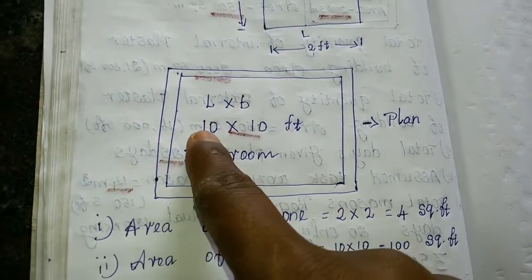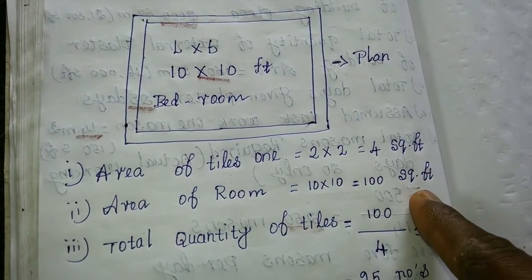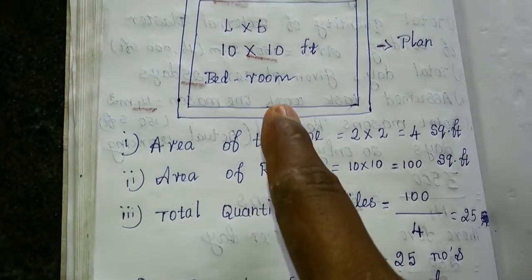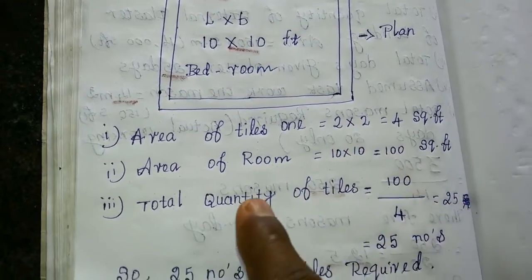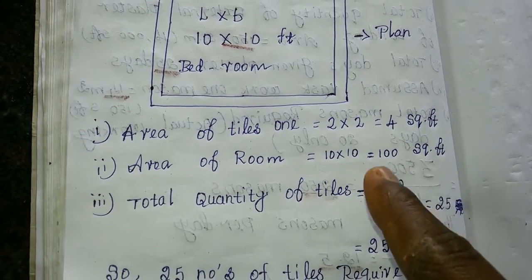Total quantity of tiles: the area of room divided by one tile's area. 100 divided by 4 is 25 number. So 25 number of tiles in the area of bedroom.